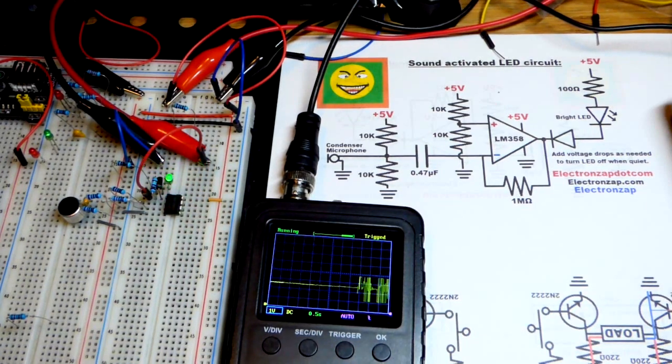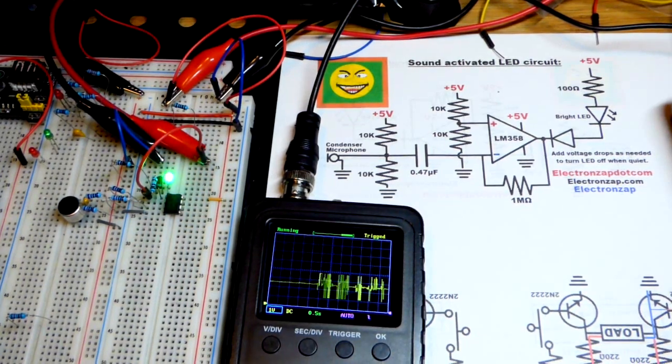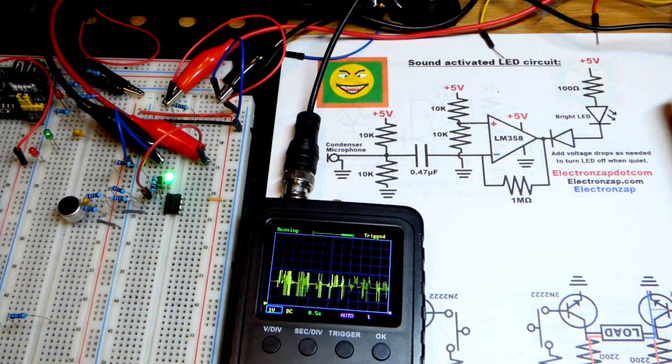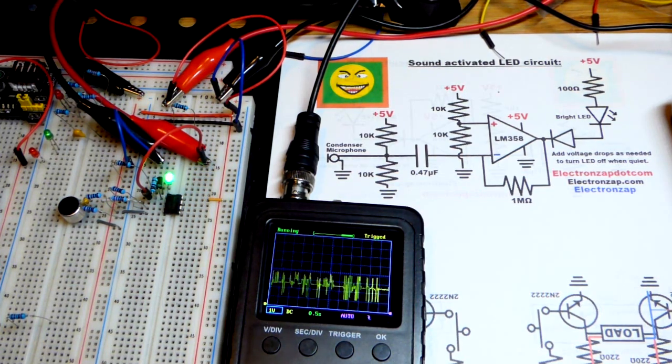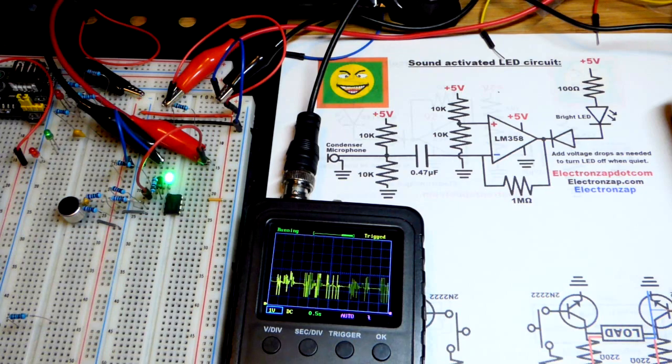In this video, we're going to look at using an op amp to light an LED when there is noise, as you can tell. When I speak up, the LED gets brighter.